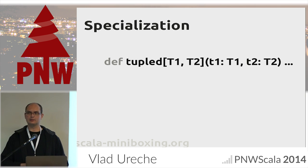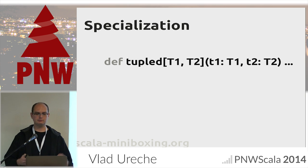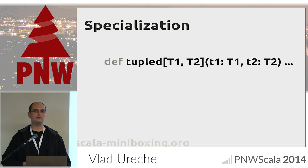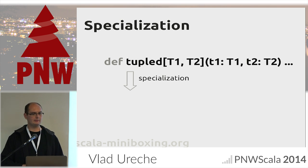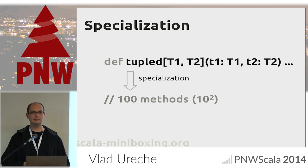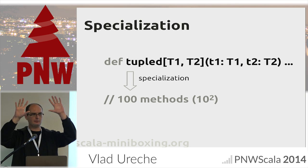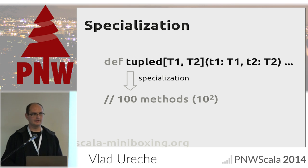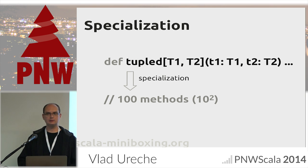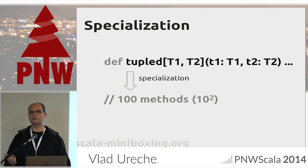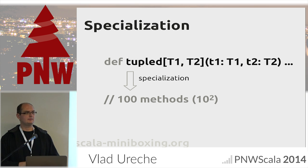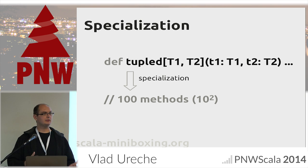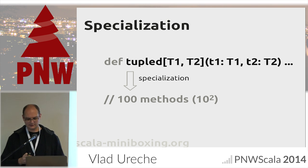Let's take a different example: Tuple2[T1, T2], which takes two type parameters, two values, and creates a tuple. With specialization, if we specialize both type parameters, we'd get 100 methods — 10 variants for the first type parameter times 10 for the second. If we have Function2, which is in the Scala library used for folds, fully specializing that would take 10 to the power of 3 — 1,000 classes. So it's not really great.